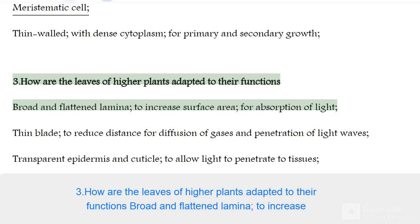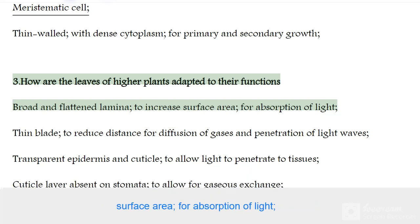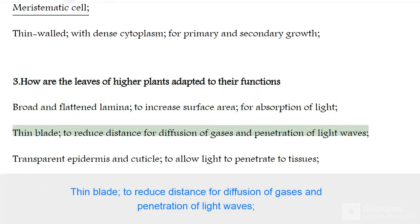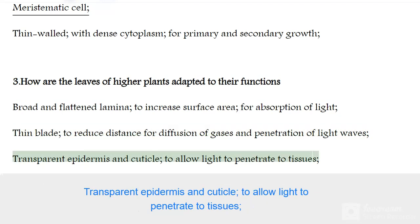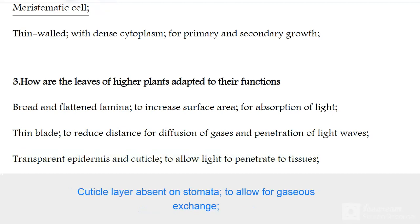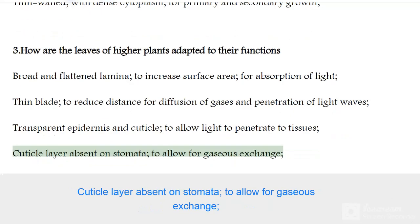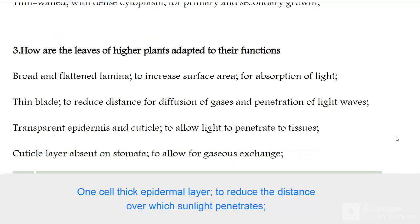How are the leaves of higher plants adapted to their functions? Broad and flattened lamina to increase surface area for absorption of light. Thin blade to reduce distance for diffusion of gases and penetration of light waves. Transparent epidermis and cuticle to allow light to penetrate to tissues. Cuticle layer absent on stomata to allow for gaseous exchange.